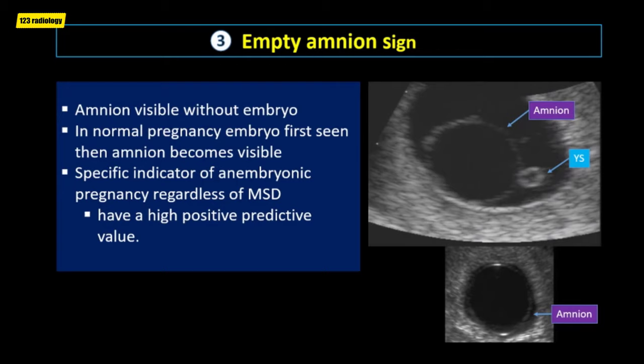The empty amnion sign is a specific indicator of anembryonic pregnancy. In normal pregnancy, the embryo is first seen as a focal thickening on the yolk sac, then the amnion becomes visible, enlarging rapidly to envelop the embryo. If the amnion is visible without an embryo, this is called the empty amnion sign, and it is an indicator of pregnancy failure regardless of the mean sac diameter, considered to have a high positive predictive value.